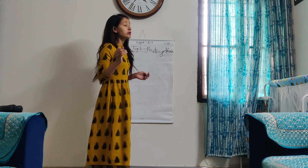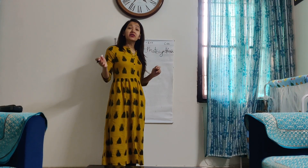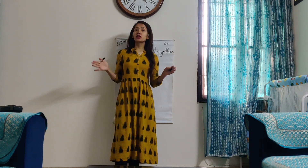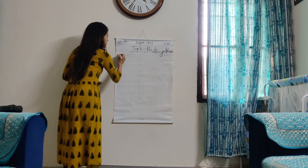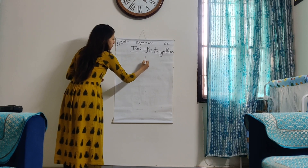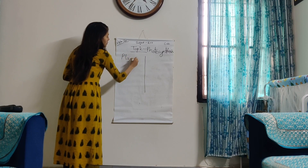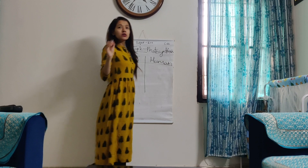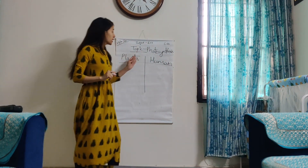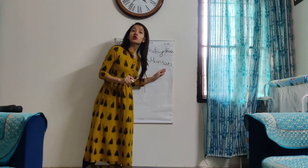Now class, let's do a small activity and then we will understand what photosynthesis is. I am going to write down the names of some things which are needed by plants and human beings to prepare their food. You have to identify which one is needed by the plants and which one is needed by the human beings — so two columns: plants and humans.